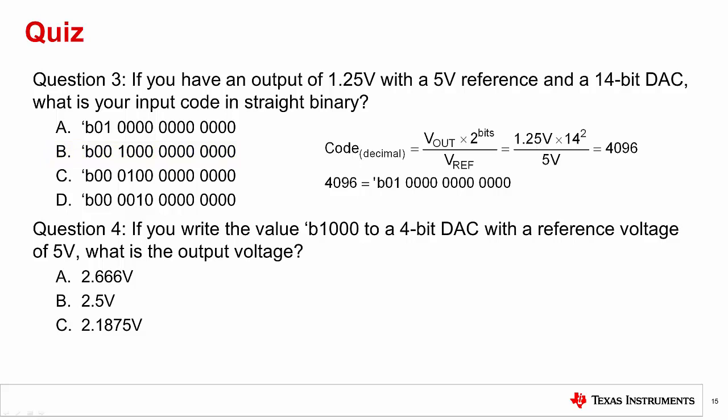Question 4. If you write the value in binary 1000 to a 4-bit DAC with a reference voltage of 5 volts, what is the output voltage? A, 2.666 volts, B, 2.5 volts, or C, 2.175 volts?